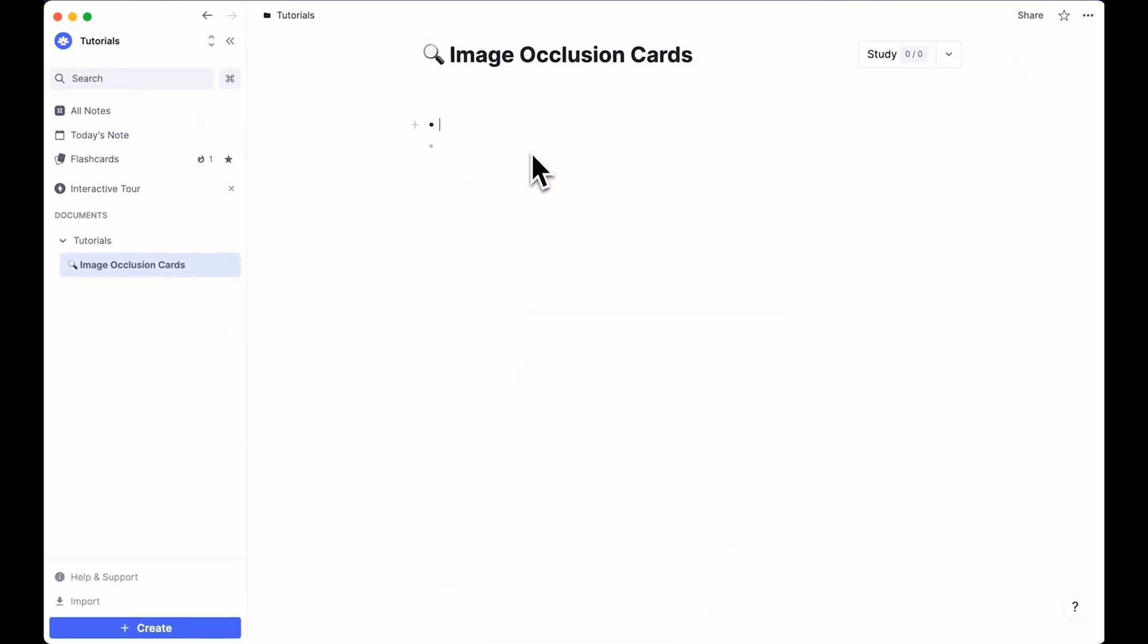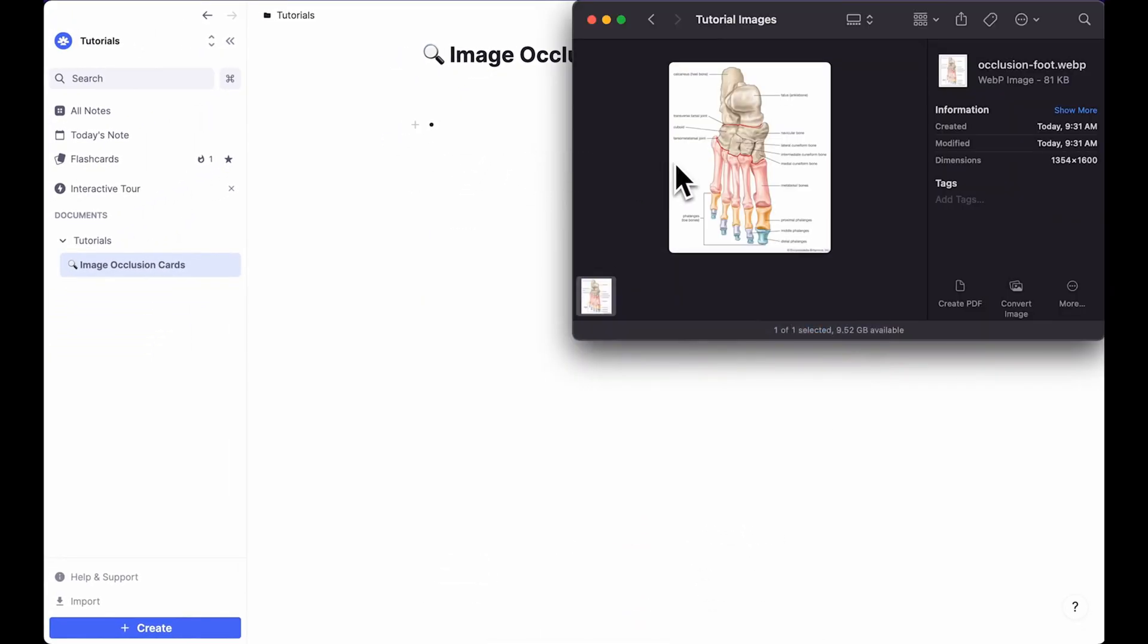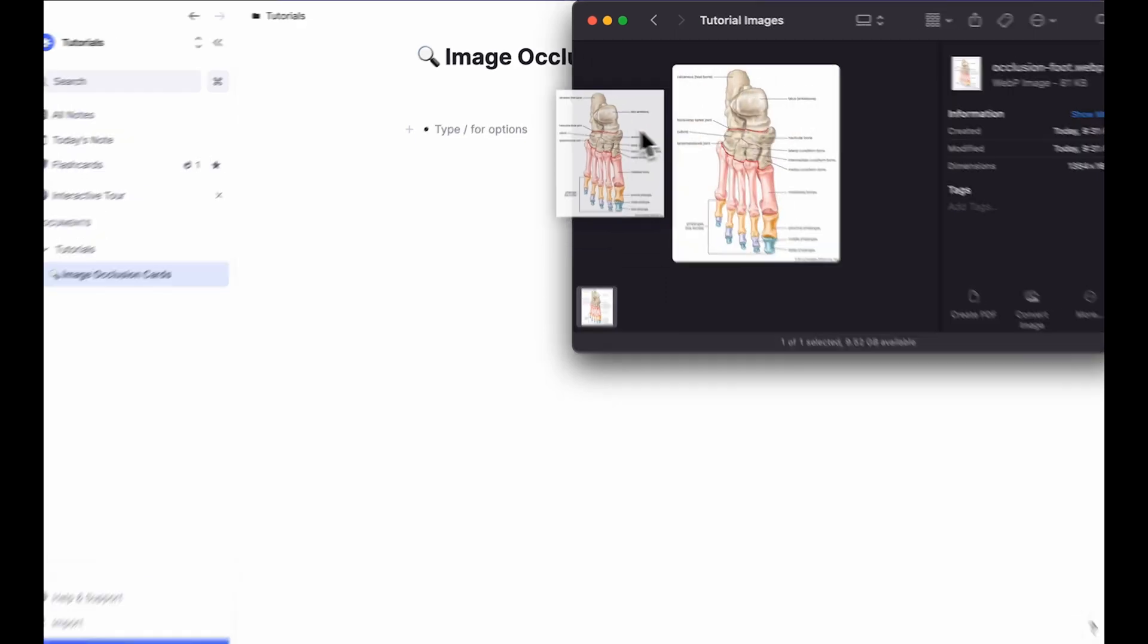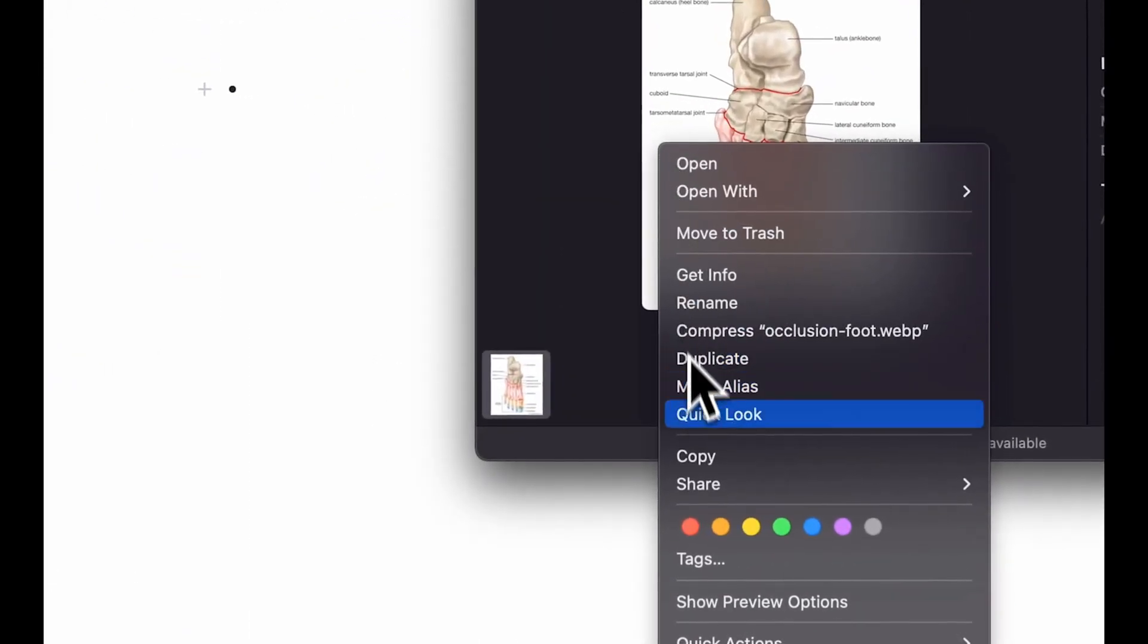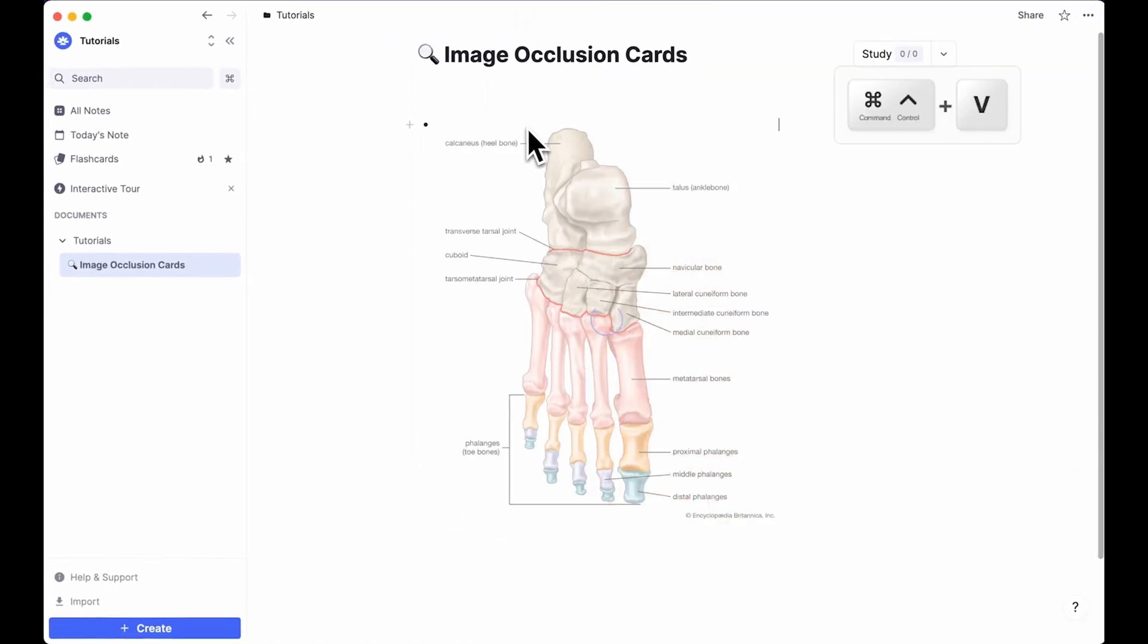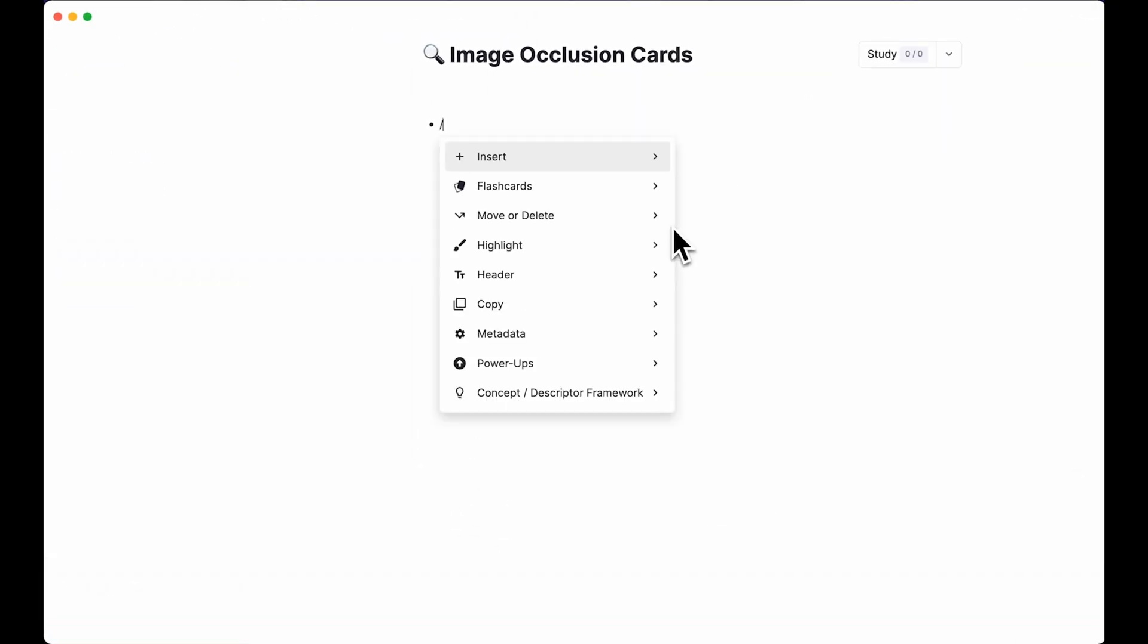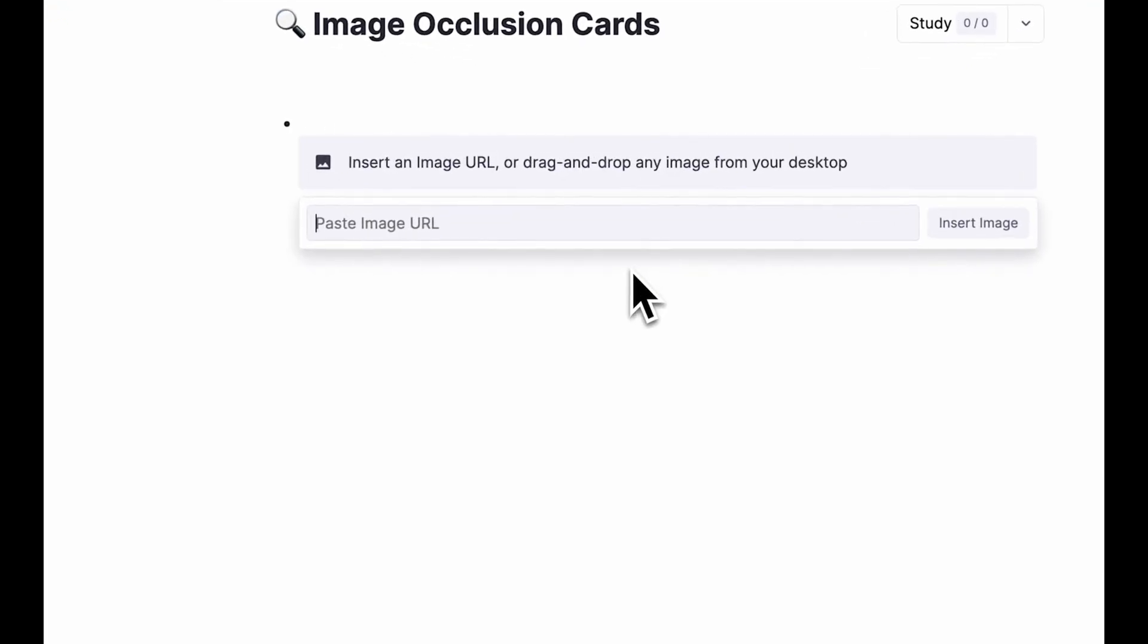To create an image occlusion card, first upload an image. There are a bunch of ways to do this in RemNote. You can drag and drop an image into RemNote, copy and paste the image using CMD or CTRL-C and CMD or CTRL-V, or type backslash image and upload the image.